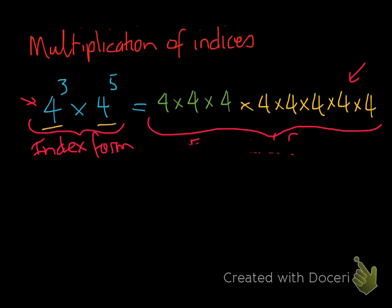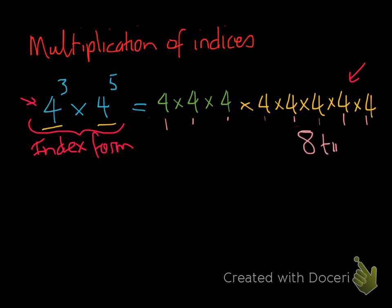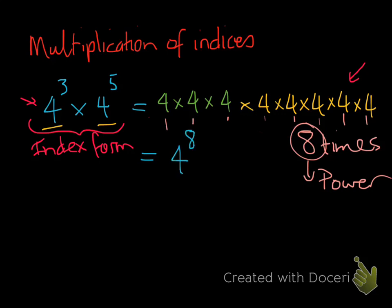If I go back and count all the 4s multiplied together — from 4³ that's three 4s, and from 4⁵ that's five 4s — I count 1, 2, 3, 4, 5, 6, 7, 8. So now I've got the same base number of 4 multiplied by itself 8 times. We know that when we multiply a base by itself a number of times, that number becomes its power. So this 8 becomes our power, and we can rewrite 4³ × 4⁵ simplified as 4 to the power of 8.